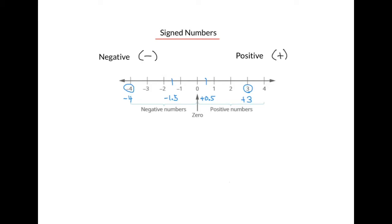It's important to note that as we move from left to right, the value of the sign number becomes greater. So positive 1 is greater than negative 4, or we could say that negative 4 is less than positive 1.